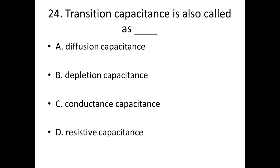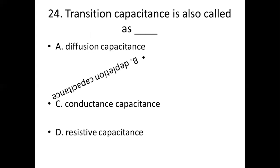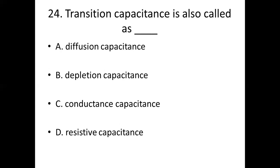Twenty-fourth one. The capacitance in a reverse-biased PN junction is dash. Option C: inductance capacitance. Option D: resistive capacitance. Answer: Option B, depletion capacitance.